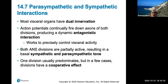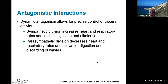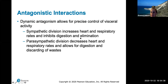Most visceral organs are dually innervated and the two ANS divisions have antagonistic effects, with one division usually predominating in a given organ. These antagonistic interactions allow for precise control of visceral activity. The sympathetic division increases heart and respiratory rates and inhibits digestion and elimination of wastes. The parasympathetic division has the opposite effect: it decreases heart and respiratory rates and allows for digestion and elimination of wastes.